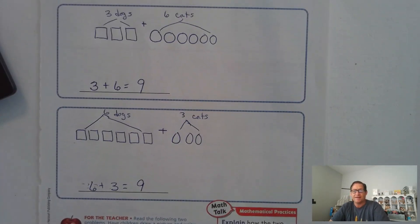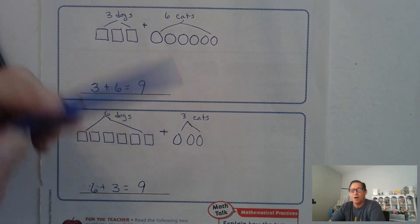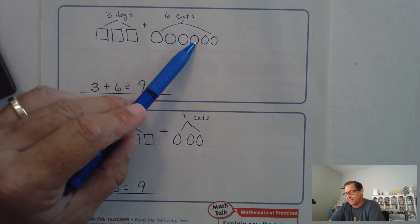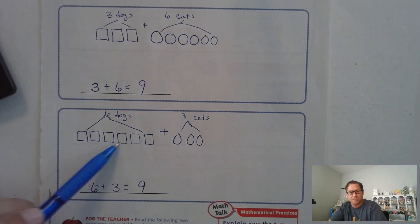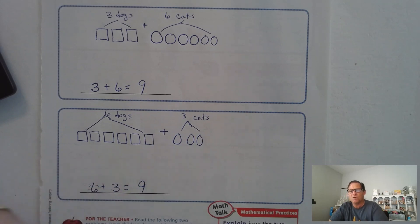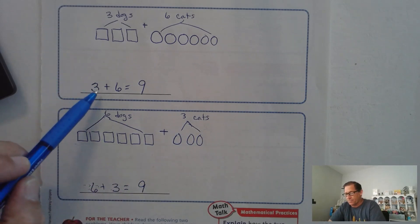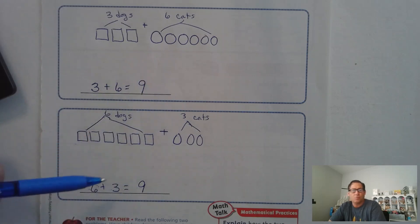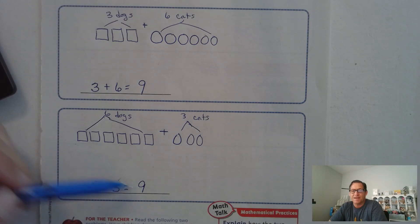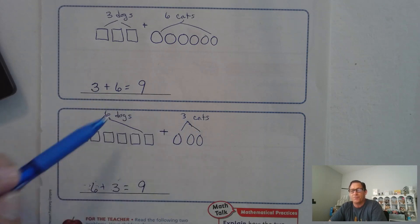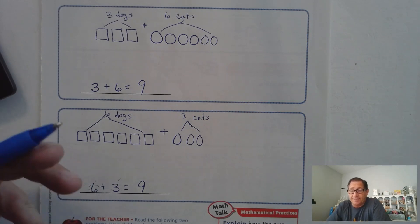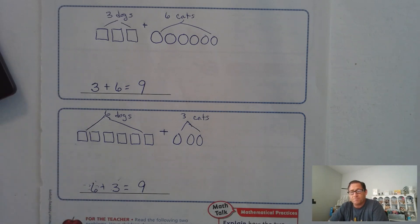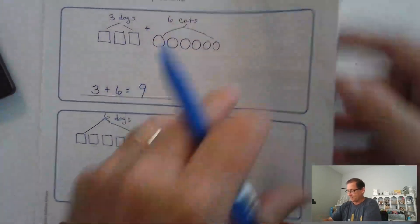It doesn't matter which way I set up my addition problem — I'm still going to get the same sum. At the beginning I went three and counted on by ones: three, four, five, six, seven, eight, nine. With six dogs it's six, seven, eight, nine. Which one was quicker? Starting at three and adding six more, or starting at six and adding three? It's easier to start at six and add three more. But the easiest method is just to know six plus three is nine, and the only way we get good at that is to practice.